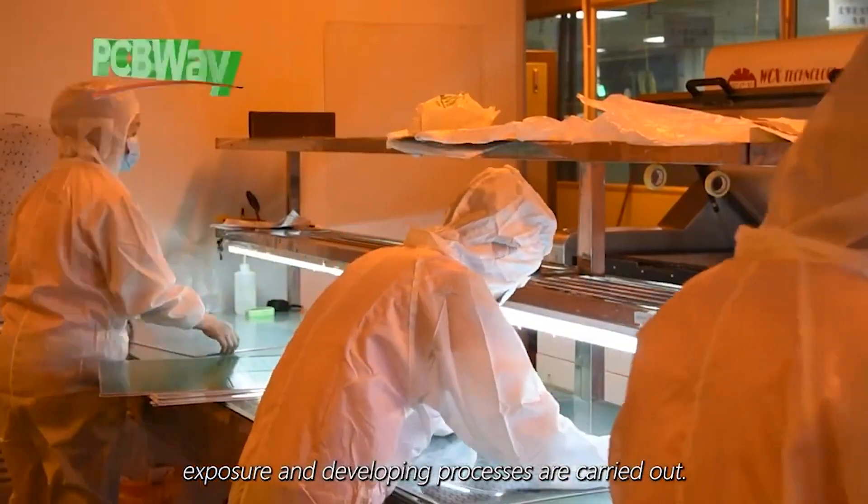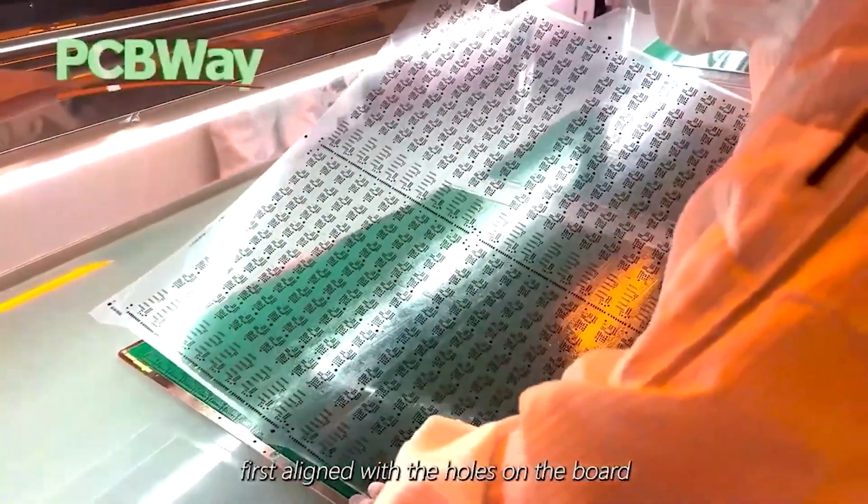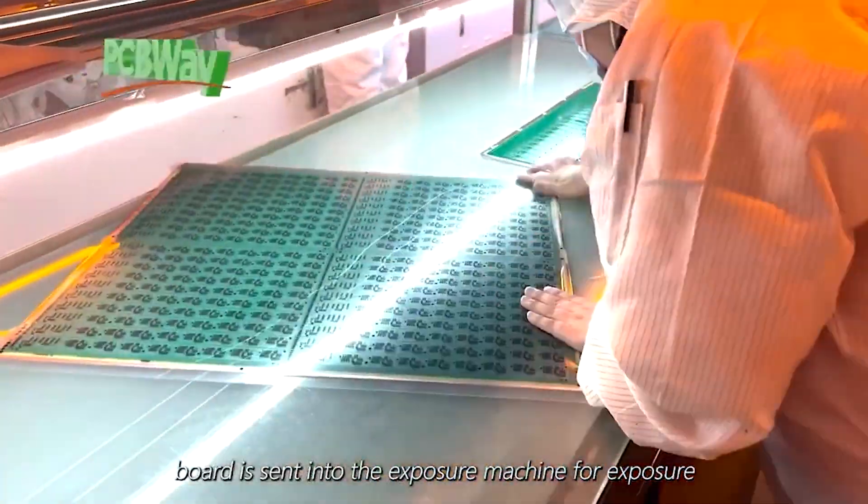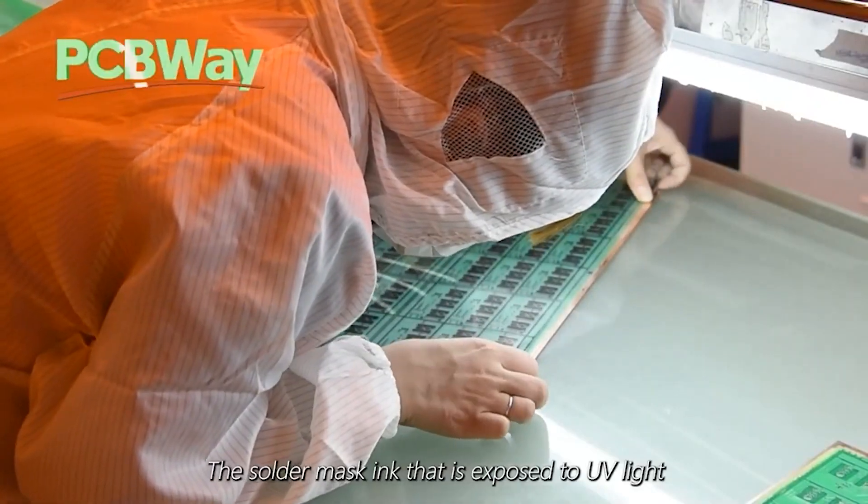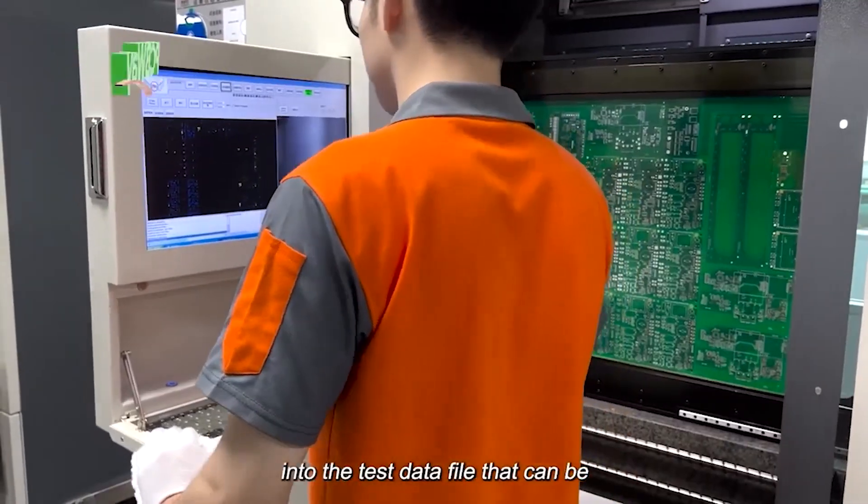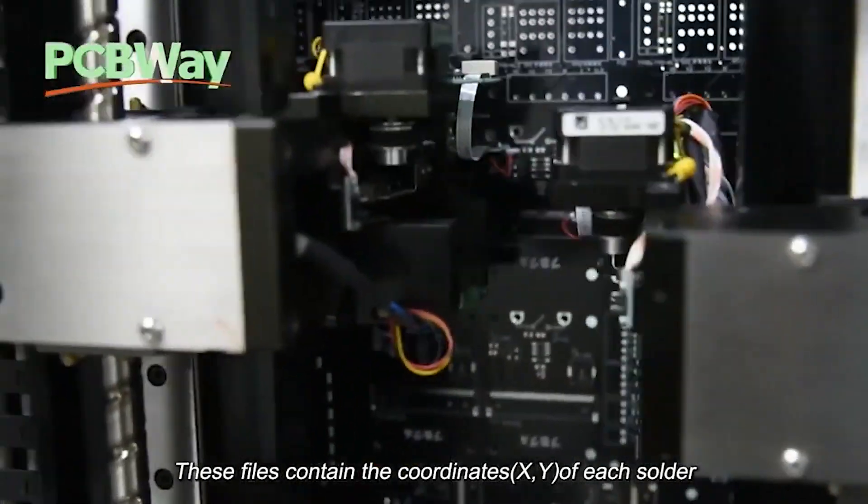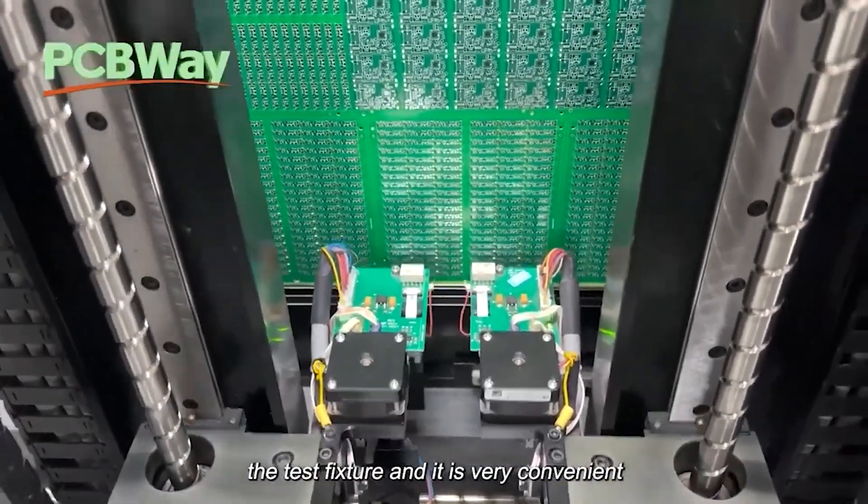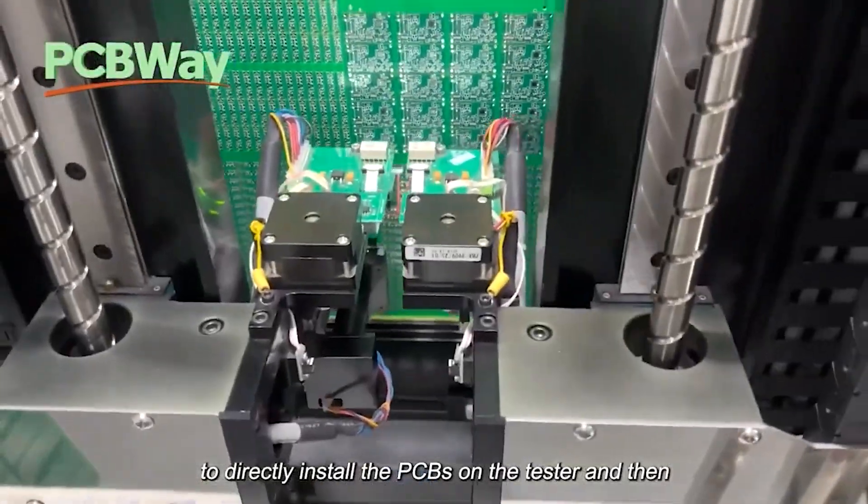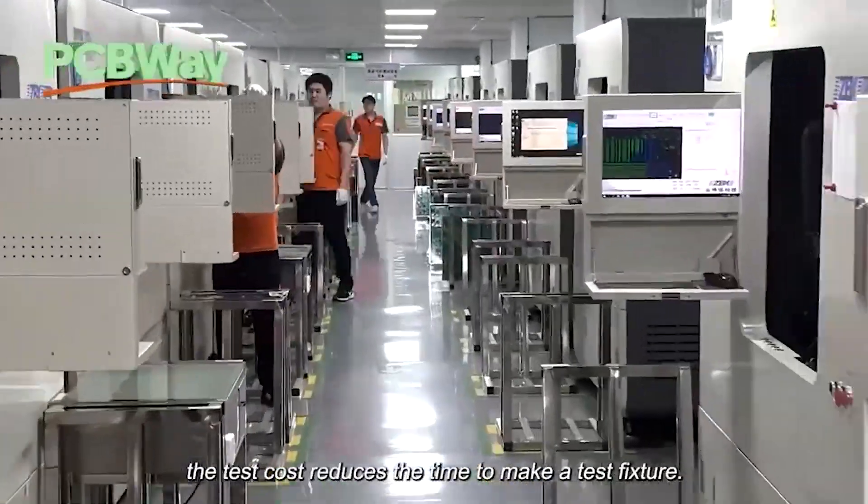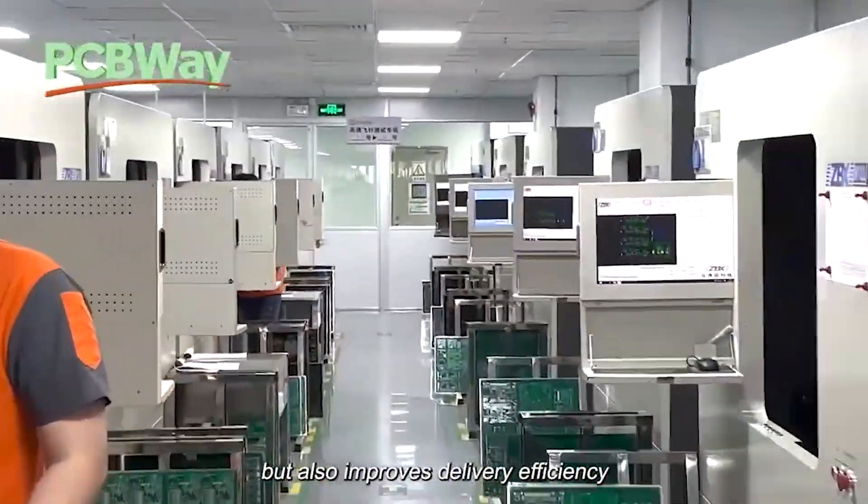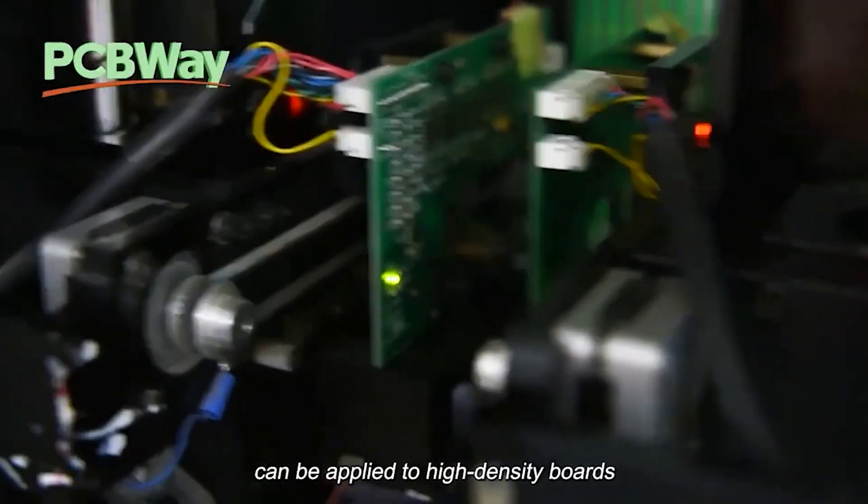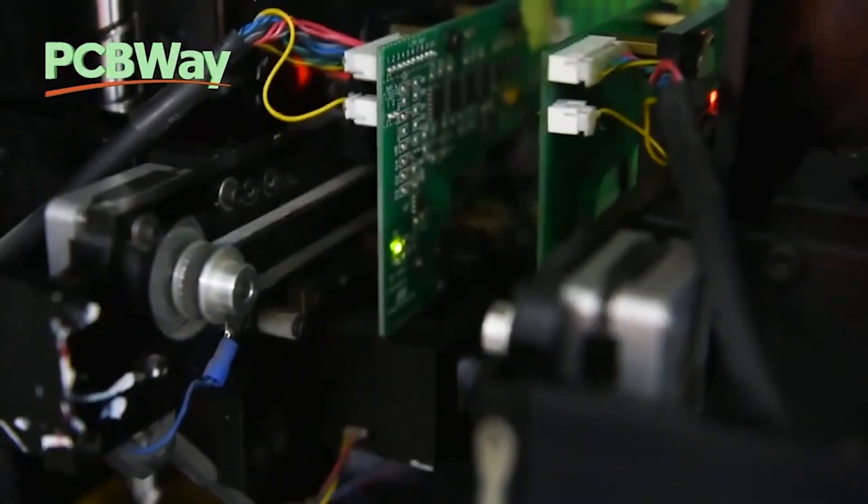PCB Way offers a variety of PCB options including single-sided, double-sided, and multi-layer boards with a wide range of materials, thicknesses, and copper weights. Their PCB assembly service where they can assemble your PCB with components is a great option for projects that require more than just the PCB so you get a fully finished product. Visit the link in the video description and see for yourself why PCB Way is the best choice for all of your PCB and manufacturing needs.